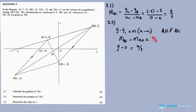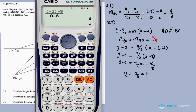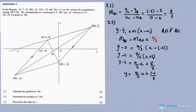Now substituting into y − y1 = m(x − x1) using point A and gradient 4/3: y − 2 = (4/3)(x − (−2)), so y − 2 = (4/3)x + 8/3. Transposing: y = (4/3)x + 8/3 + 2, and 8/3 + 2 equals 14/3.